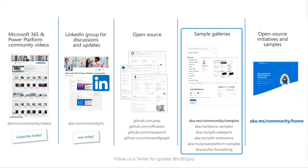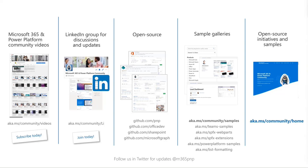It might be difficult to find the relevant sample for you because there's so much available on GitHub. That's why we are surfacing all Microsoft 365 and Power Platform samples in one centralized location. You can go to aka.ms/community/samples and easily find the relevant sample. All Microsoft and community samples are surfaced from one centralized location. AKMS community home is the one URL where you'll find all the different call information and assets.